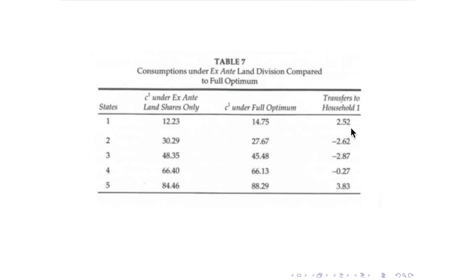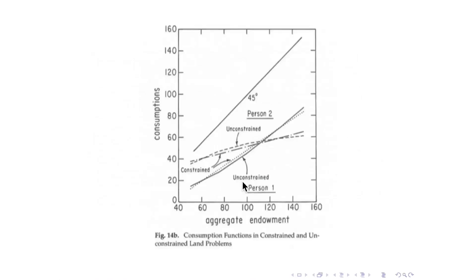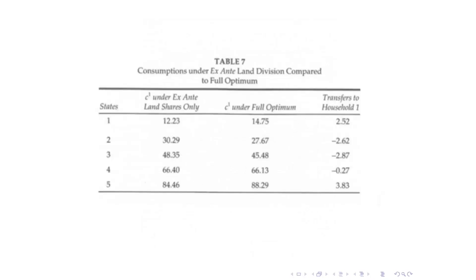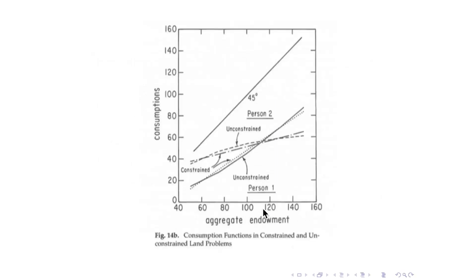Looking across five states — moving from low to high aggregate endowment — household one's constrained consumption is monotonically increasing with aggregate, but differs from the full optimum. At the lowest state household one would consume more under the full optimum; at an intermediate state, less; and at the highest state, more again. So there are required transfers from household two to household one: positive in low states, negative in middle states, positive again in high states. This is consistent with the numbers shown.